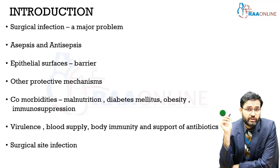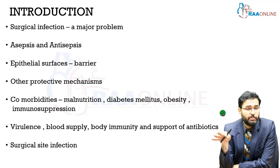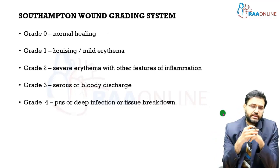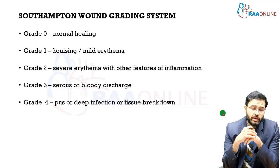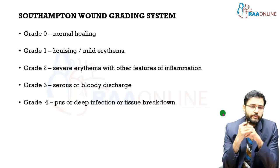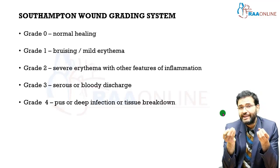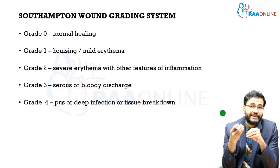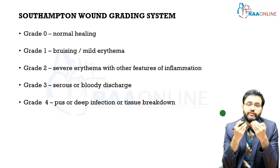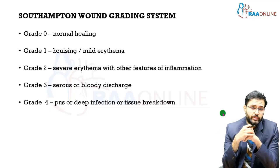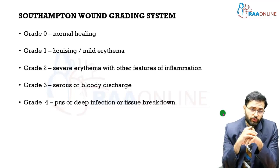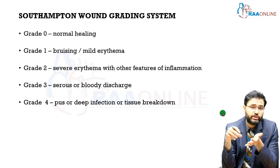Surgical site infection can occur and can be both superficial or deep — we will discuss that as a topic later. To grade a wound that is getting infected, there is the Southampton wound grading system. Grade zero is a normally healing wound; grade one has bruising and mild erythema; grade two has severe erythema with other features of inflammation; grade three has serous or bloody discharge; and grade four has pus, deep infection, or tissue breakdown.